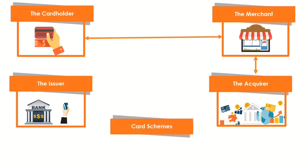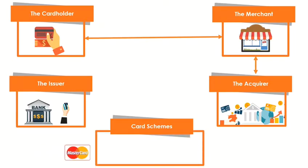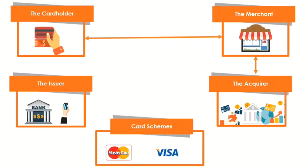The card scheme represents a link between the acquirer and the issuer bank. A card scheme facilitates the transfer of the card information, clearing, and the sum settlement for an authorized purchase between the acquirer and the issuer. Visa and MasterCard are two examples of card schemes which are popular worldwide.